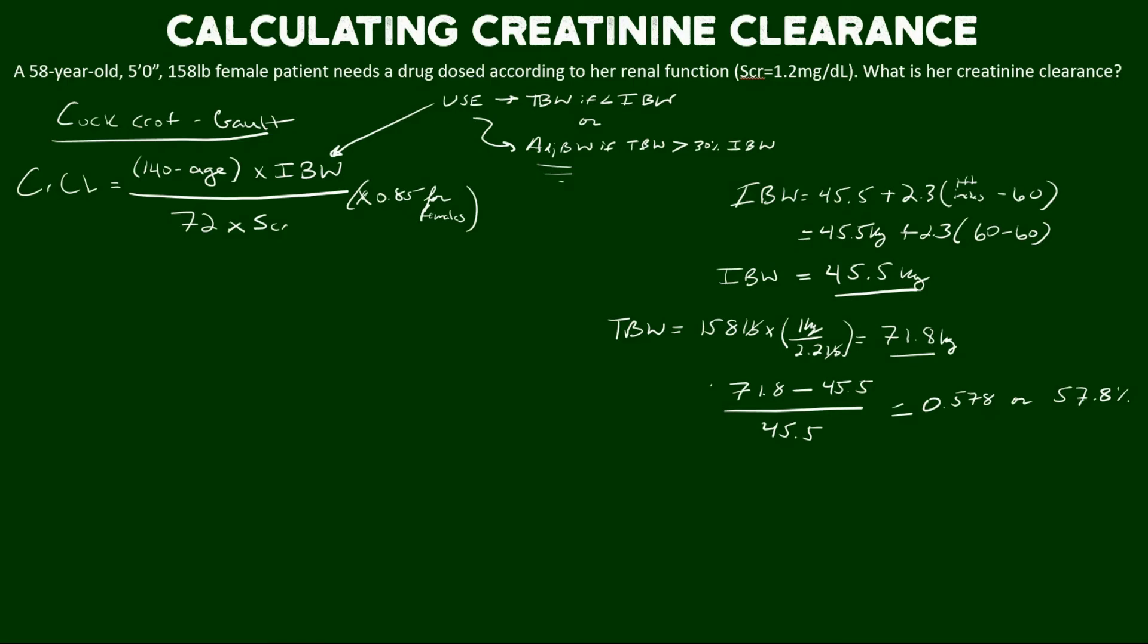So we need to use the adjusted body weight in this creatinine clearance equation. So let's calculate adjusted body weight. As we saw in my other video it's an adjustment to the patient's ideal body weight because their total body weight is substantially higher than their ideal body weight of about 40%.